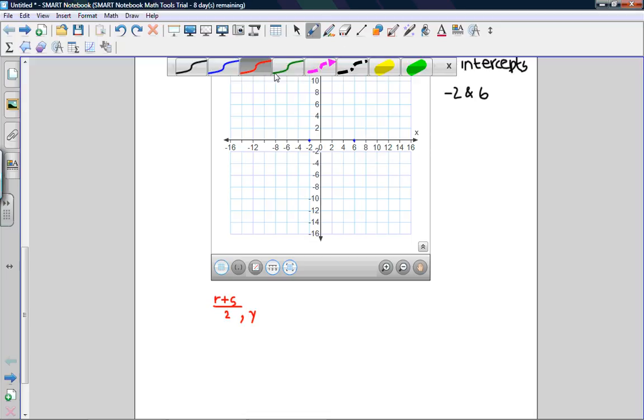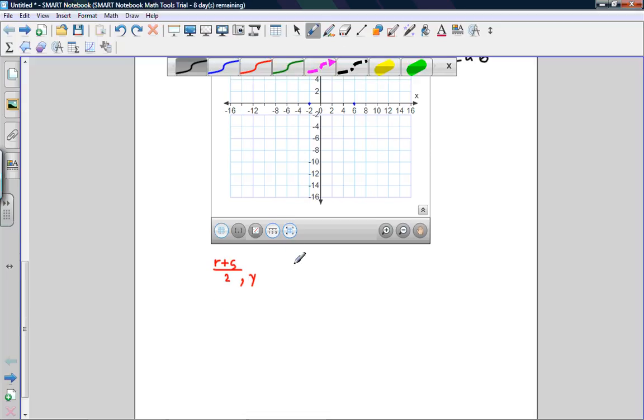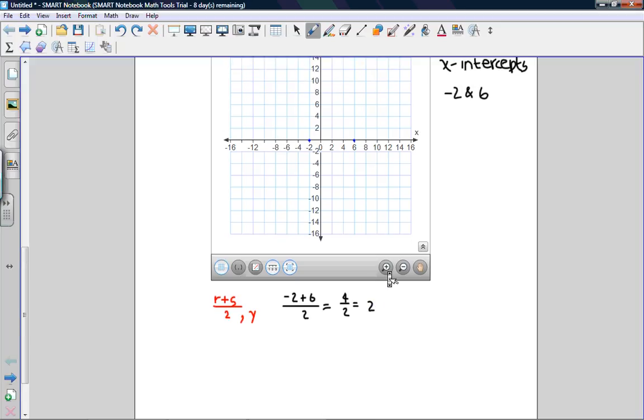So I'll plug them into the equation. This becomes 4 over 2, and that becomes 2. So our x-coordinate for our vertex is 2.